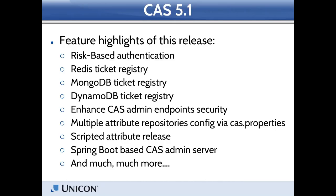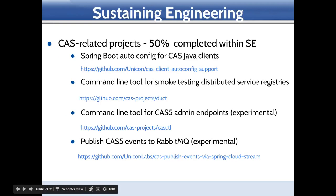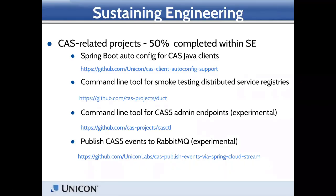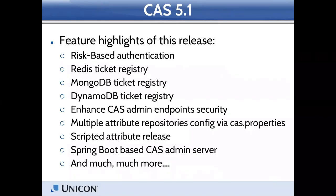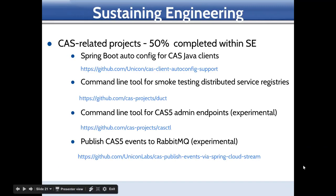CAS 5.1 tightens security around its various administrative HTTP endpoints. It also implements a flexible facility allowing multiple principal attribute repository sources to be defined via CAS properties — something not available in 5.0. CAS 5.1 adds scripted attribute release with support for Groovy, JavaScript, and Python, to satisfy more complex attribute release use cases. Additionally, 5.1 introduces a Spring Boot-based CAS admin server — a separate web application able to expose CAS server metrics to an operator and manage its internal state visually.